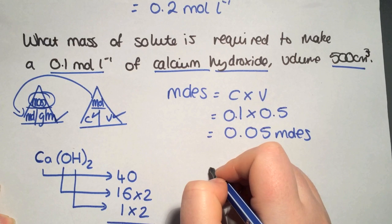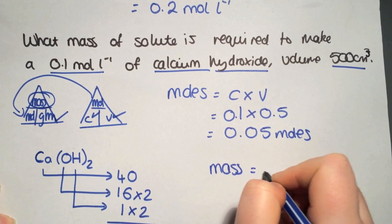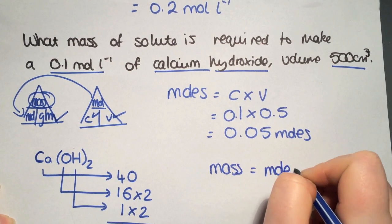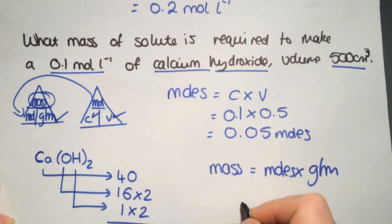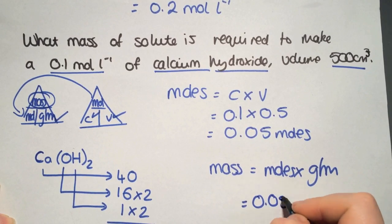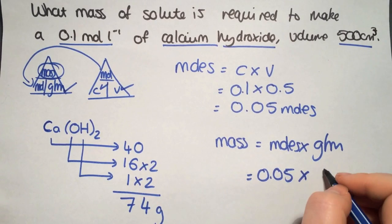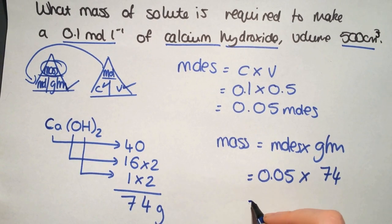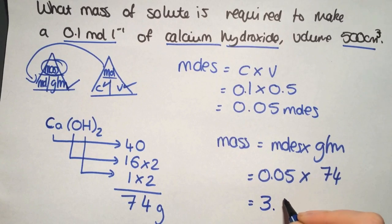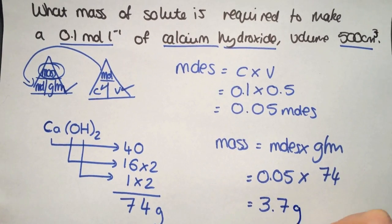Now we have mass equals moles times gram formula mass. The moles is 0.05 multiplied by 74, giving you a total mass that you would have to weigh out of 3.7 grams.